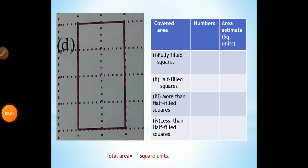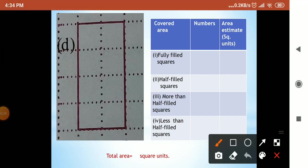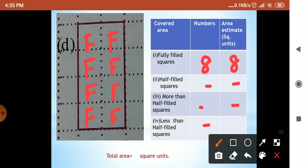Let's go to sum D. Which was fully filled? This was fully filled and this was fully filled. The units which were fully filled I'm writing F. It is eight. Half filled — not there. More than half and less than half — not there. The answer is eight square units.